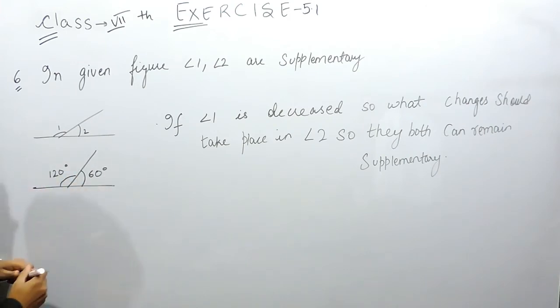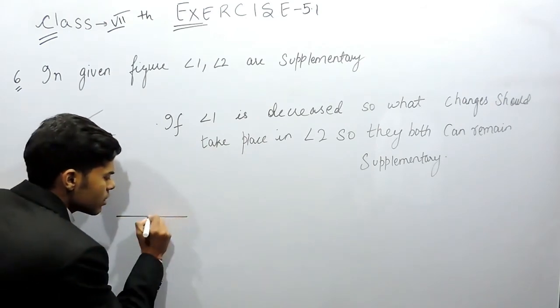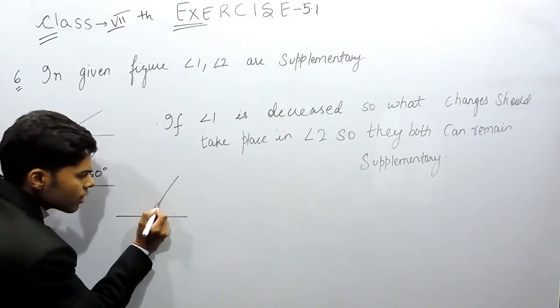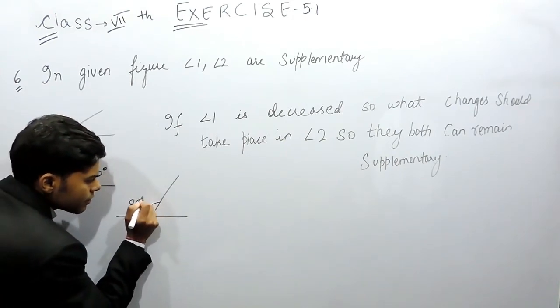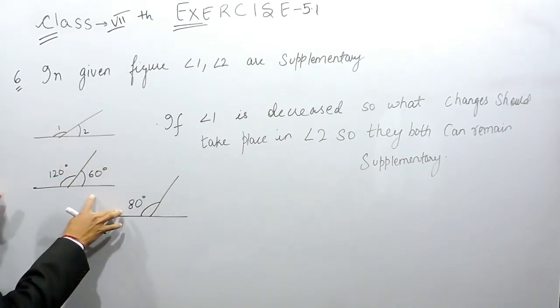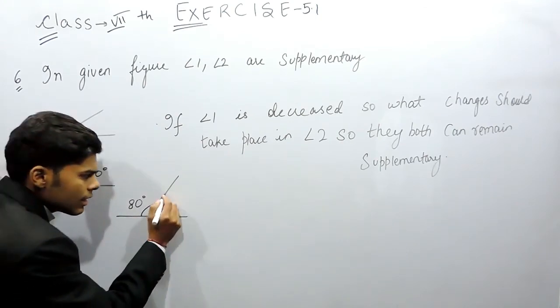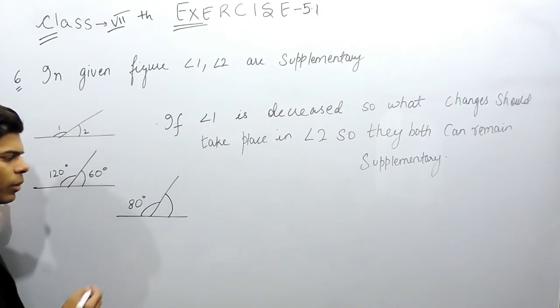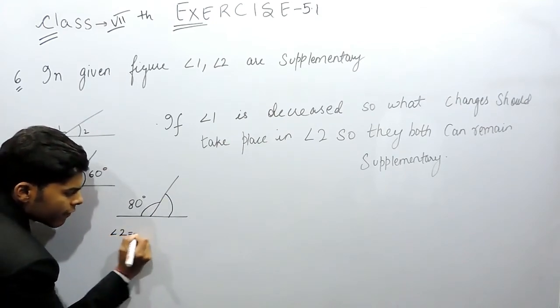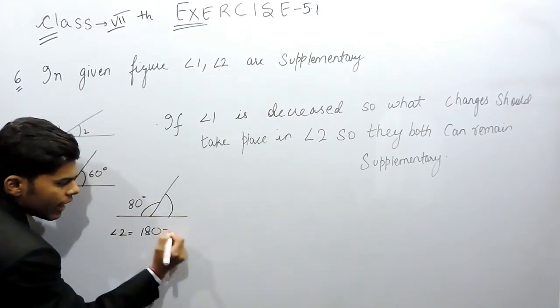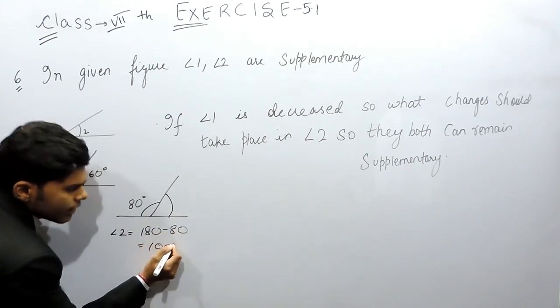As per the question, this is angle 1, which is decreased. So suppose angle 1 becomes 80 degrees. Now in order to be supplementary angles, this angle 2 should be equal to 180 minus 80, that is equal to 100 degrees.